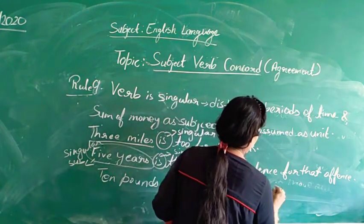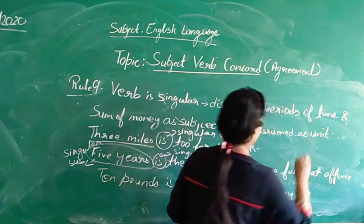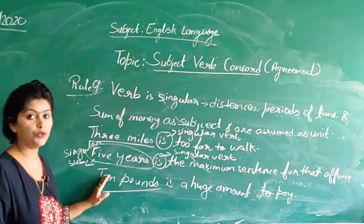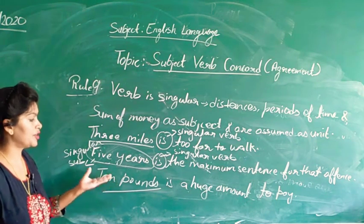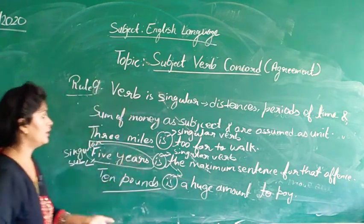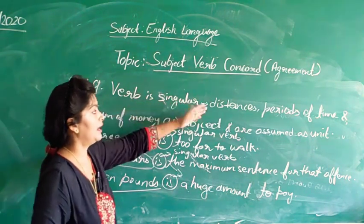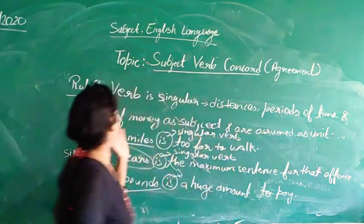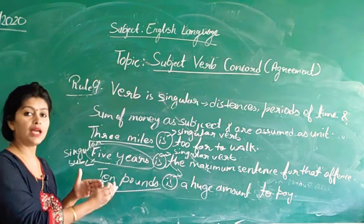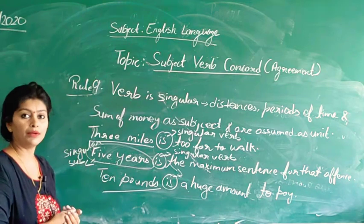For sum of money: 'Ten pounds is a huge amount to pay.' Again, ten pounds is a singular subject functioning as a unit where we are measuring money, and we use a singular verb. Rule number 9 states that a verb is singular if we refer to distances, periods of time, and sums of money as subject, assumed as a unit measuring a certain quantity.